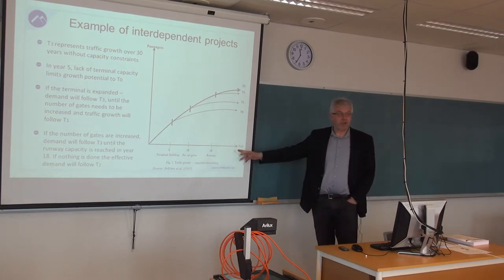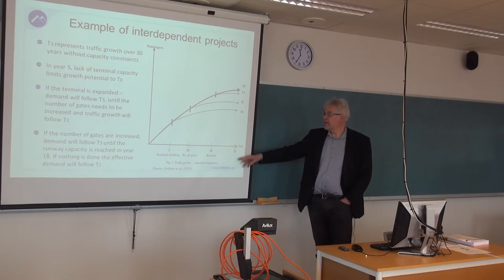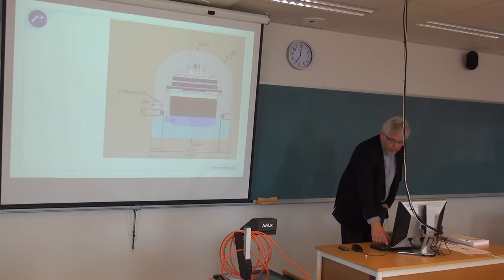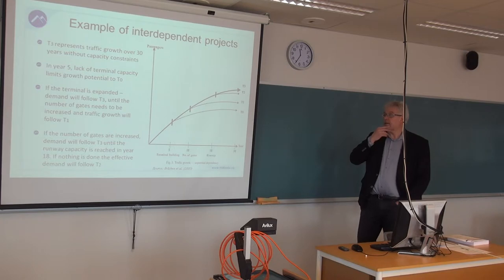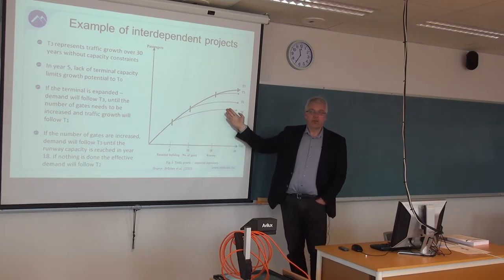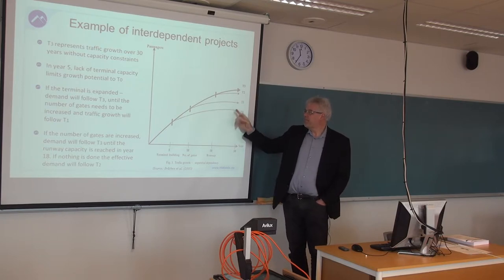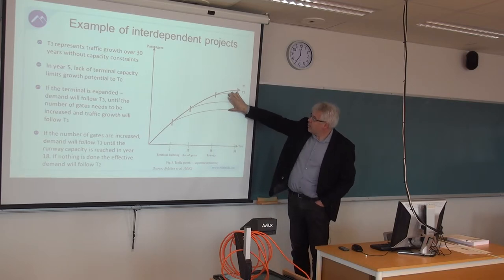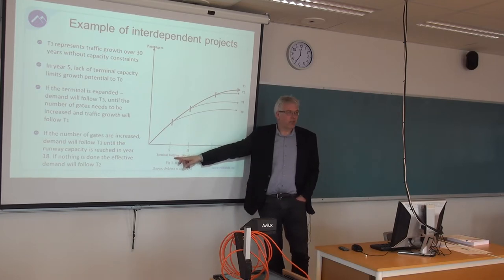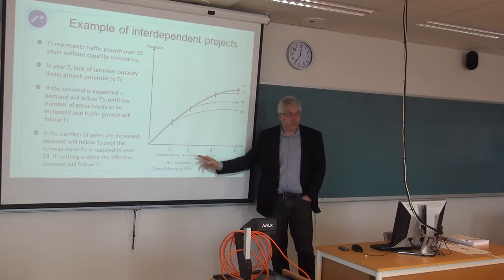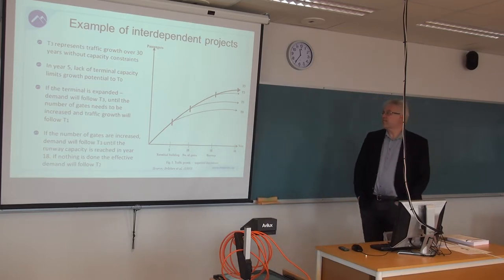There is a discussion about how to package these different projects — doing something with the terminal building, the number of gates, and the runway — it's a kind of package that you can analyze separately. The market for the terminal building will be the difference between two traffic lines; the market for the terminal building plus the number of gates will be the market between those two lines; and then the runway comes up further. You have a certain time period for which you run the analysis, and the main guideline is that you have to make decisions also taking the costs connected to the increased number of gates into consideration.